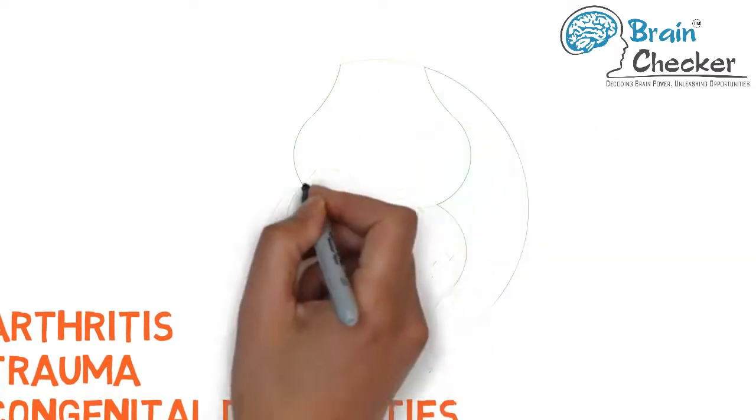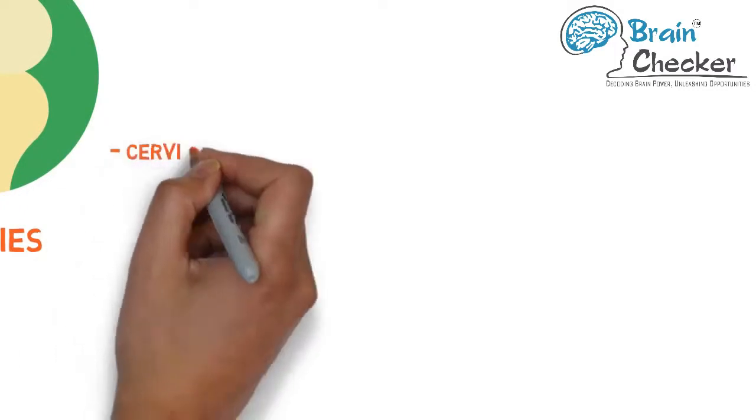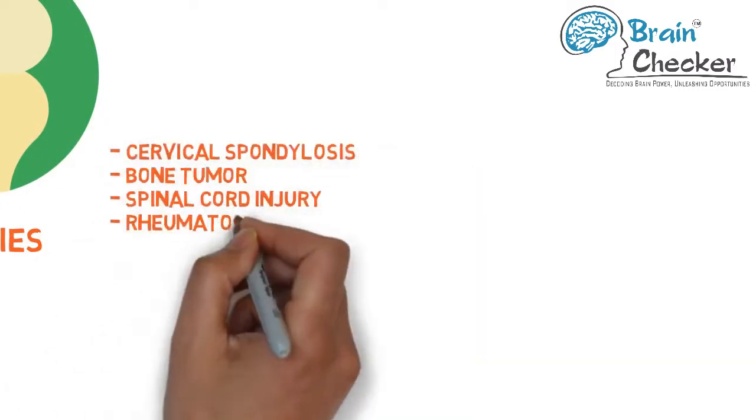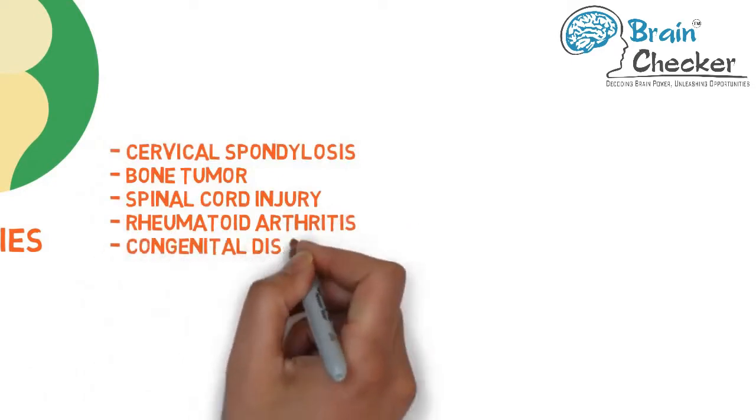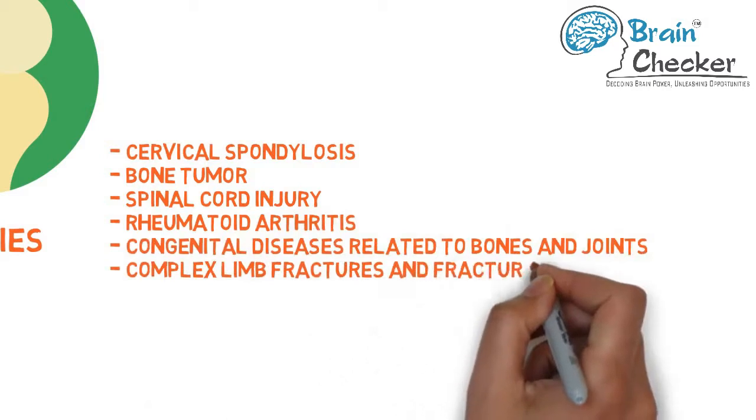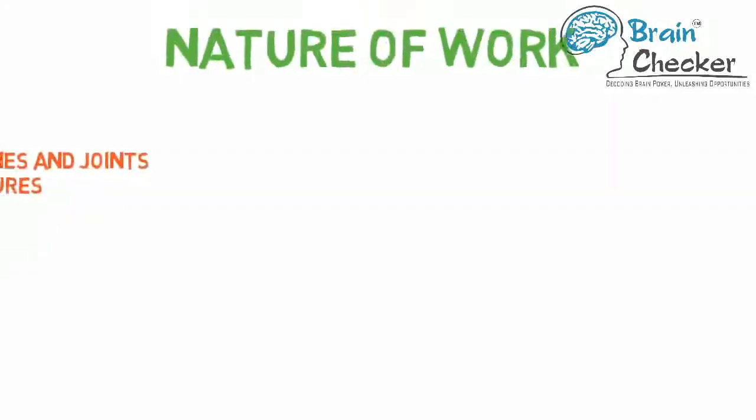Orthopedics covers how to diagnose and treat diseases related to bones and joints such as all kinds of cervical spondylosis, bone tumor, spinal cord injury, rheumatoid arthritis, congenital diseases related to bones and joints, complex limb fractures, and fractures that do not get healed. Now let's go to nature of work.